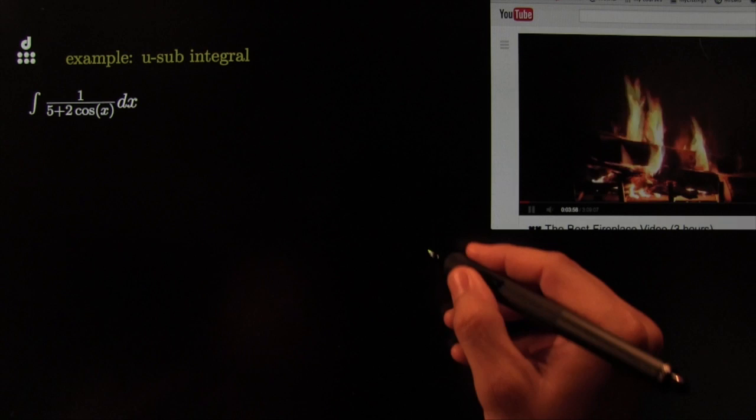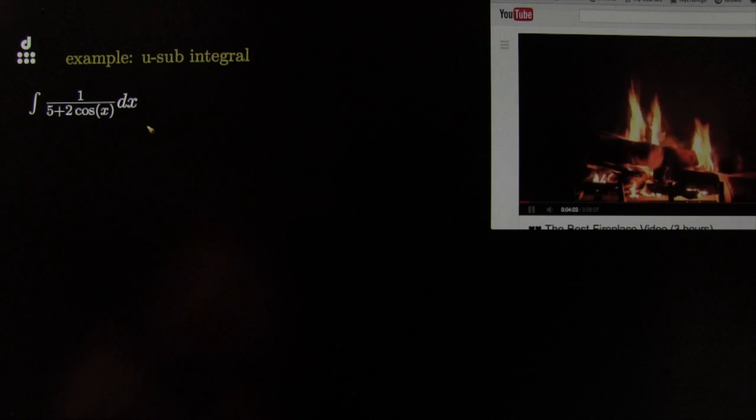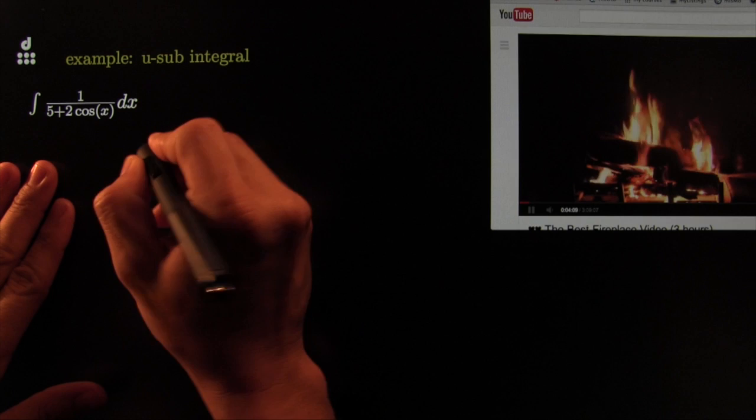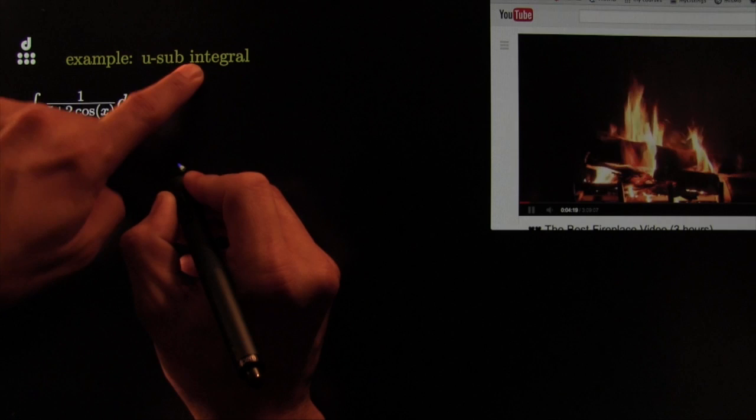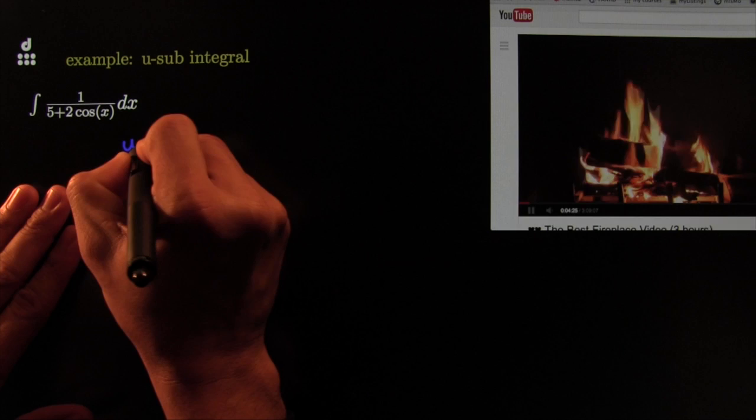I'm also going to need my ink program — there it is. I can't believe I get paid to do this. This one is really challenging, but we've got some very special ideas today. We're going to go with blue for the dictionary. This is a crazy dictionary — the most crazy u-substitution you have ever seen.